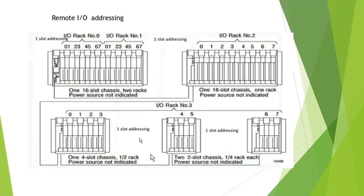This is remote I/O addressing. For example, here is one-slot addressing: I/O rack number 0, this one-slot addressing is 16 slots, so it has 16 IO groups — that's 2 racks, rack 0 and rack 1. The second one is remote, it's 16 addresses, it's 2 slots, so it has 1 rack — rack 0 and rack 1. Here is the 1-slot address for all 8 racks, so it's just rack number 3.